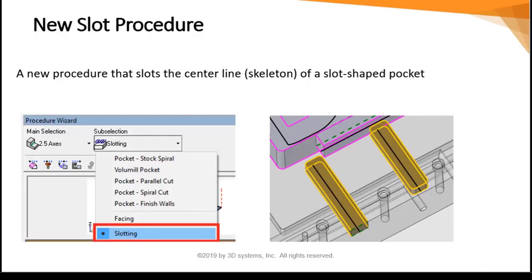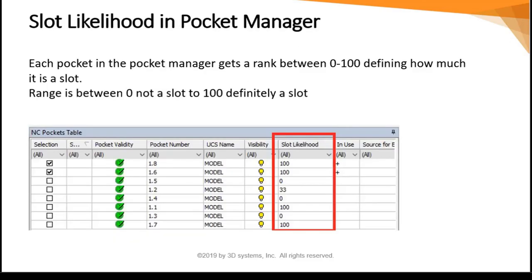New slot procedure. This is a new procedure that slots the center line — a skeleton — of a slot-shaped pocket. This new procedure only deals with the stock-removing stage of slot machining and does not deal with the wall and floor finish stages. A new column in the pocket manager table is slot likelihood. Each pocket in the pocket manager gets a rank between 0 to 100, defining how much it is a slot.